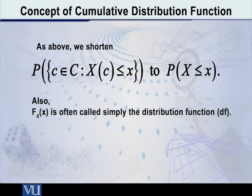We can shorten it. We can also say it like this, that capital F of small x is the probability of capital X being less than or equal to x. This CDF, the cumulative distribution function, many times we simply call it the distribution function.